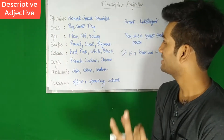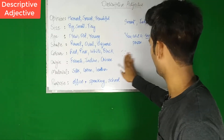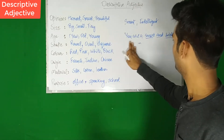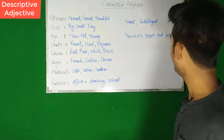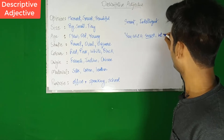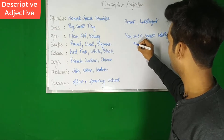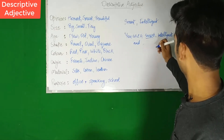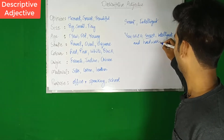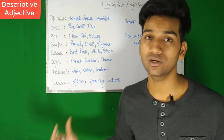When you use more than two adjectives from the same category, what does the sentence look like? Let's suppose I use three adjectives from the category opinions: 'You are a smart, intelligent and hardworking person.' So when you use more than two adjectives from the same category, you separate them using commas, and before the last adjective, we use 'and.'